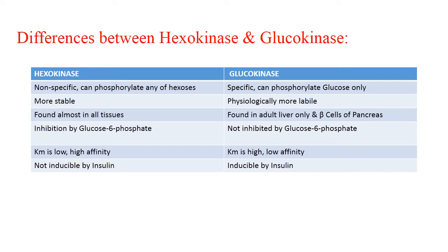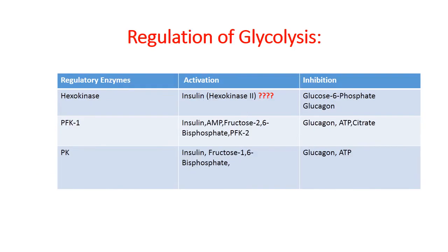Hexokinase is inhibited by its product glucose-6-phosphate, whereas glucokinase is not inhibited by glucose-6-phosphate. Hexokinase has a low Km (Michaelis constant), meaning high affinity; glucokinase has a high Km, meaning low affinity. Hexokinase is not inducible by insulin, whereas glucokinase is insulin-inducible. Hexokinase has two variants; hexokinase-2 is inducible by insulin.